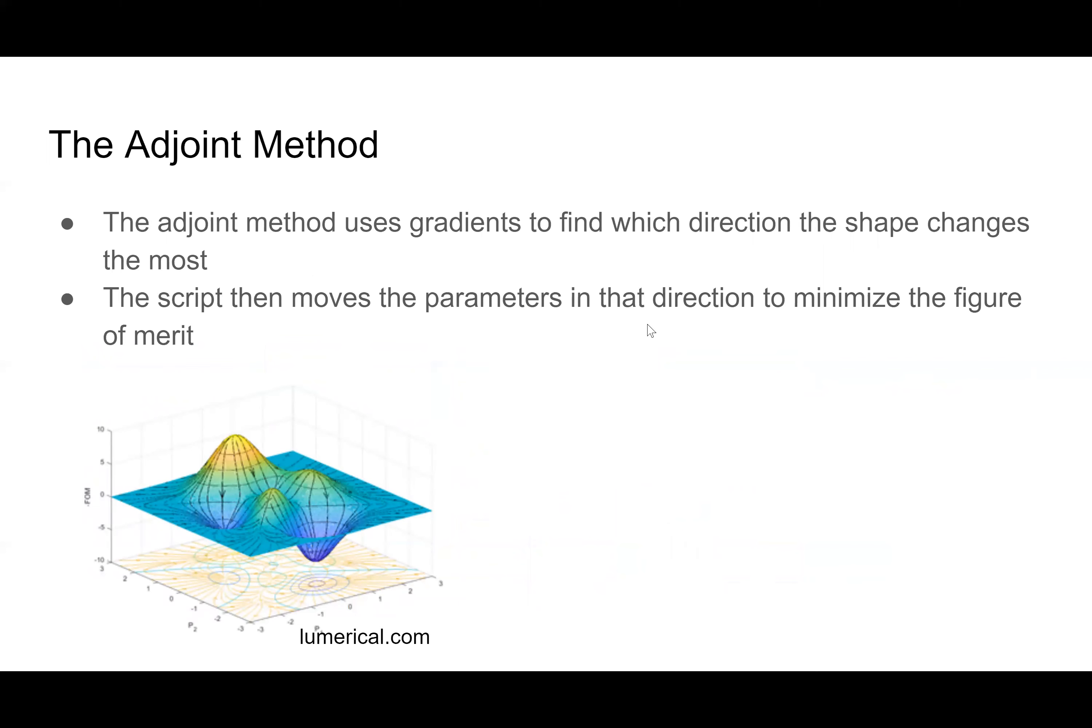So the inverse design is certainly good, but requires the computer. And that can take a lot of computing power. One way to limit this is the adjoint method, which uses gradient. So your figure of merit essentially creates a surface like so. Picture down here. This picture is also from Lumerical.com. And so the adjoint method takes gradients of the surface to decide which direction is the fastest rate of descent. And then it moves your optimizable parameters in that direction of descent to maximize the figure of merit, which is your target.